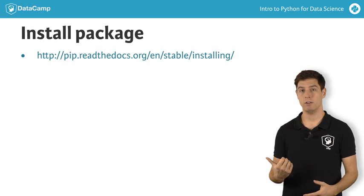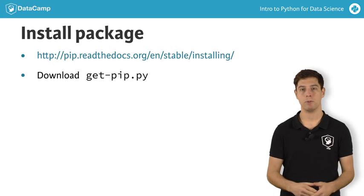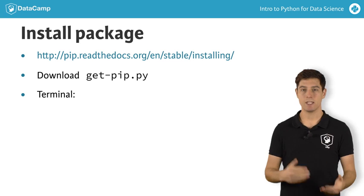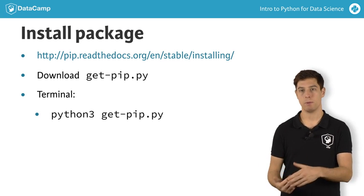If you go to this URL, you can download the file get-pip.py. Next, you go to the terminal and execute python3 get-pip.py.